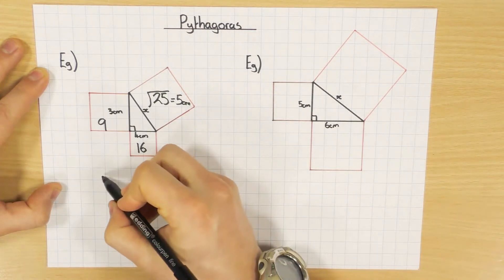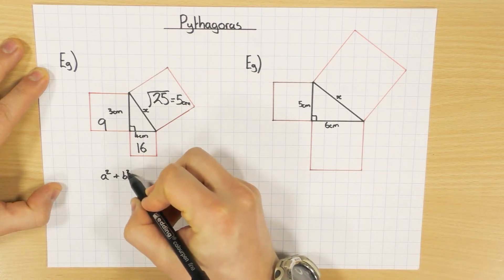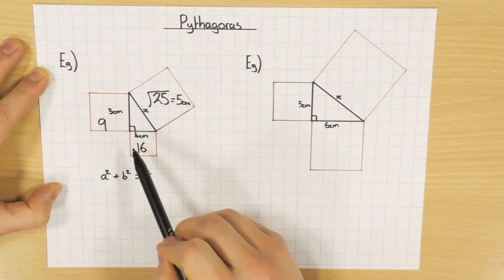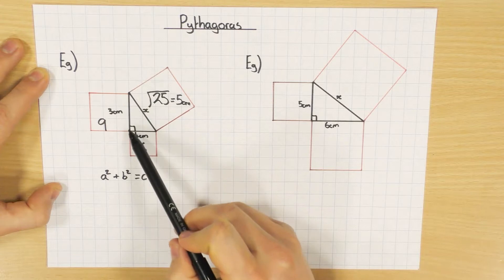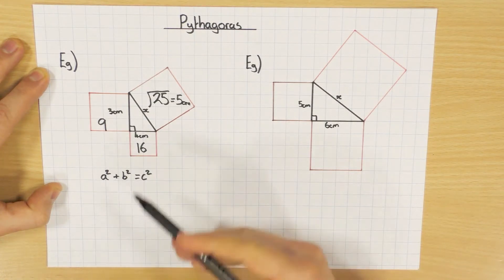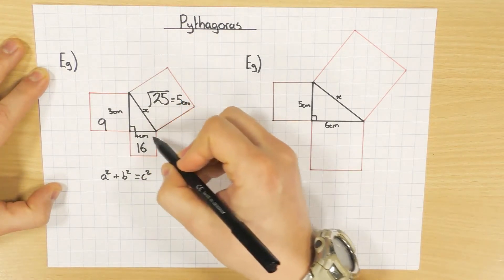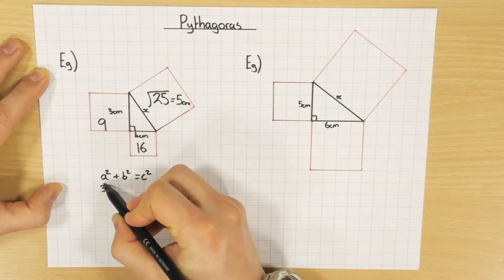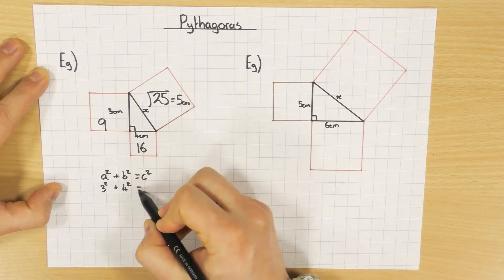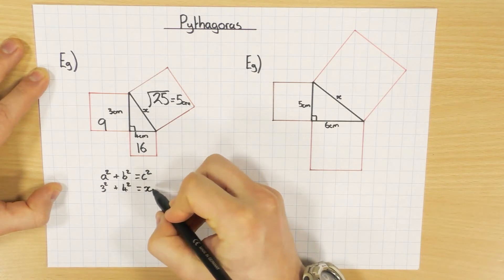The other way is using the formula a squared plus b squared equals c squared, where a and b are the two smaller sides. So a and b would be the smaller sides, and all you would do is substitute in the values. So I would have 3 squared plus 4 squared, and that would equal x squared, since the missing length is called x.